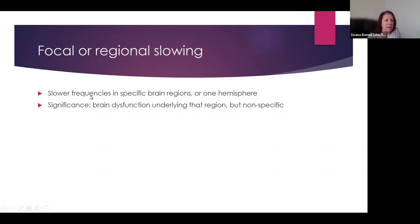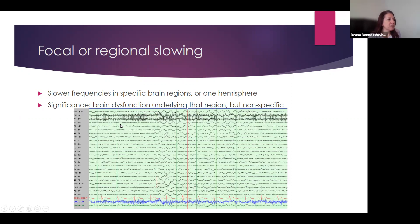Focal or regional slowing means there are slower frequencies seen in particular brain regions or possibly in one hemisphere. This usually signifies localized or more focal dysfunction underlying that region, but it's not specific — we can see this for a whole host of reasons, not just in patients with seizures and epilepsy. It can be seen in folks that have had strokes, brain tumors, sometimes migraines, and sometimes we don't know why we see it. This EEG example shows focal slowing going on for a longer period of time in the left temporal region, and also seen in the right temporal region, telling us this person has some dysfunction in both temporal regions but perhaps worse on the left.